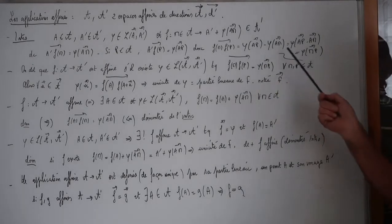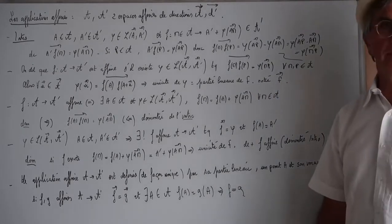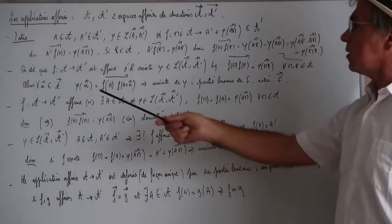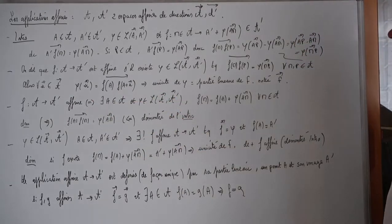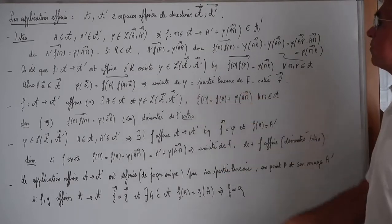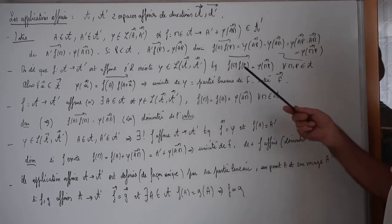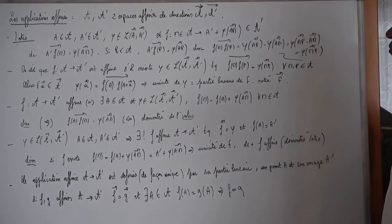C'est cette relation qui va nous permettre de définir ce qu'est une application affine. On dit que F de A vers A' est affine s'il existe une application linéaire Φ de la direction de A vers la direction de A' vérifiant : le vecteur F(M)F(P) est égal à Φ(MP), quels que soient M et P deux points quelconques de A.